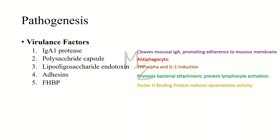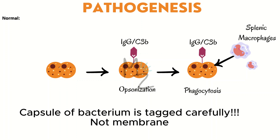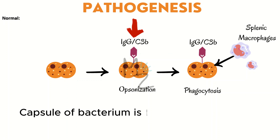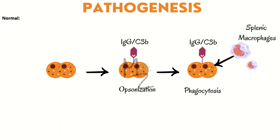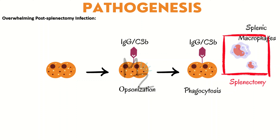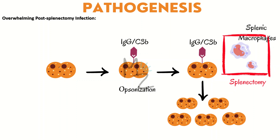The polysaccharide capsule is really high yield as a virulence factor. Normally, when a bacterium enters the human body, its membrane is tagged with IgG or C3b — a process called opsonization. Signals are then sent to the spleen to dispatch macrophages for phagocytosis. The human body relies on both opsonization and phagocytosis to eliminate infection. When there is no spleen — as in overwhelming post-splenectomy infection — there will be no phagocytosis. Only opsonization cannot clear the bacterium, so bacterial numbers increase and cause a more severe, overwhelming systemic infection.